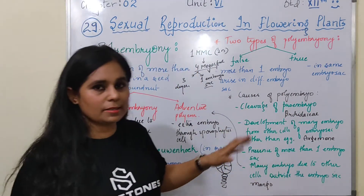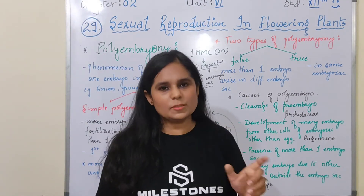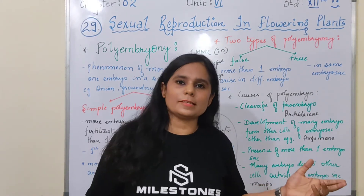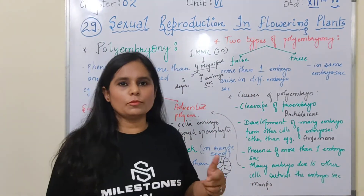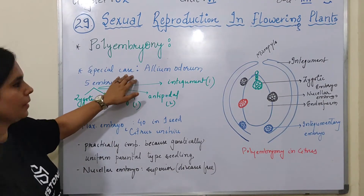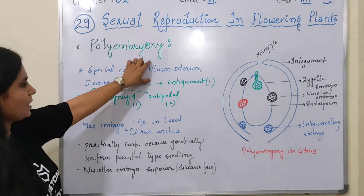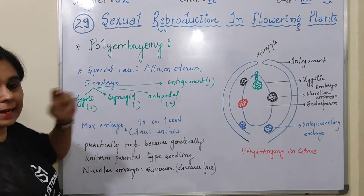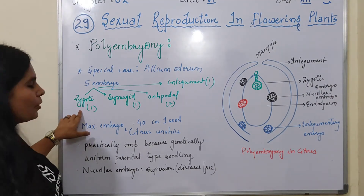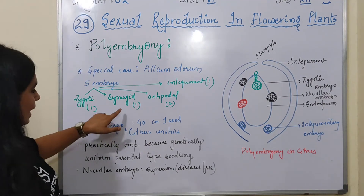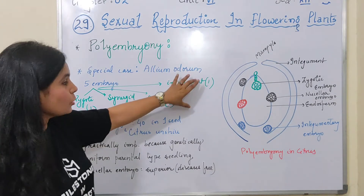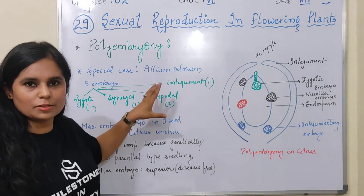Now let me discuss some specific cases. In the case of Allium odorum, in one seed you will find five embryos: one embryo from the zygote, one from a synergid, two from antipodal cells, and one from the integument. This is a special case where so many parts contribute to embryo development.